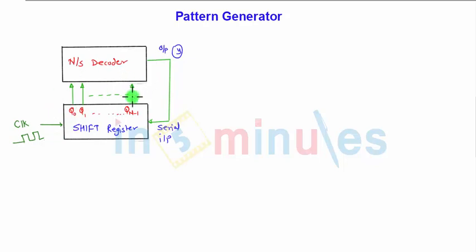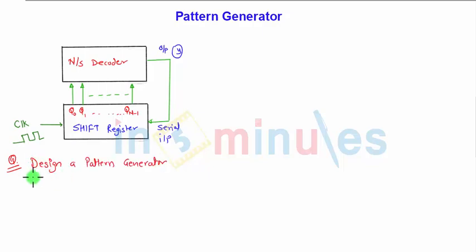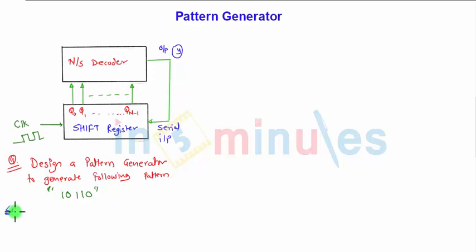This is how the pattern generator works with the help of a shift register. To understand the actual working, we need to take an example. The question is: design a pattern generator to generate the following pattern. The pattern is 1 0 1 1 0. We need to generate this pattern. First, identify the number of bits — the length of the pattern is 1, 2, 3, 4, and 5 bits.